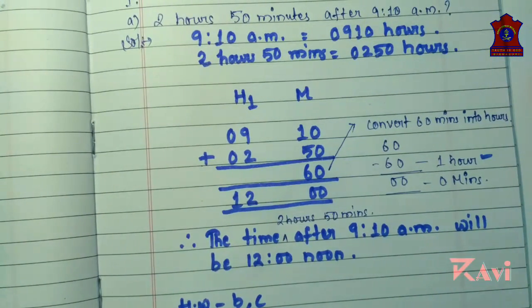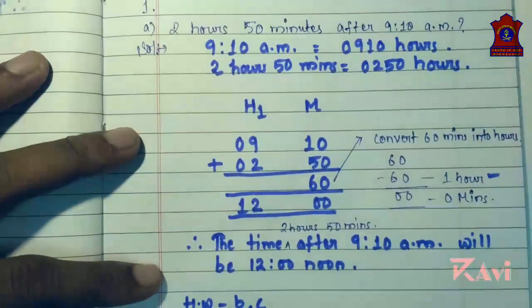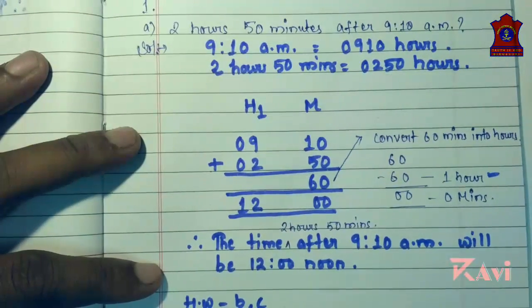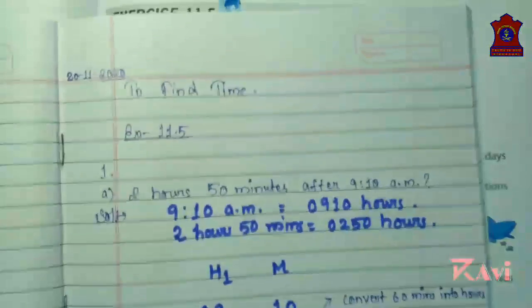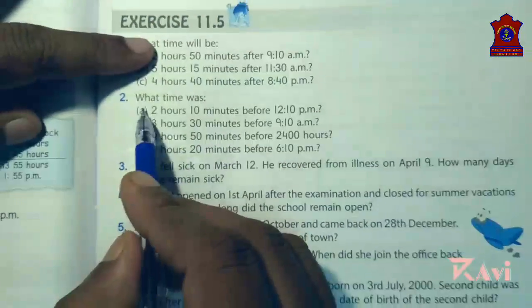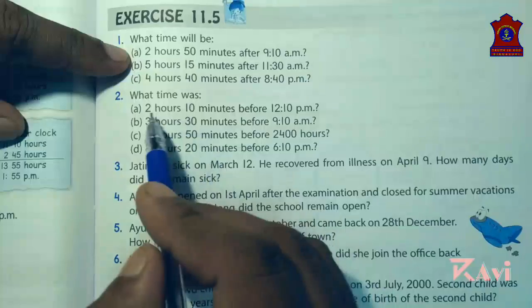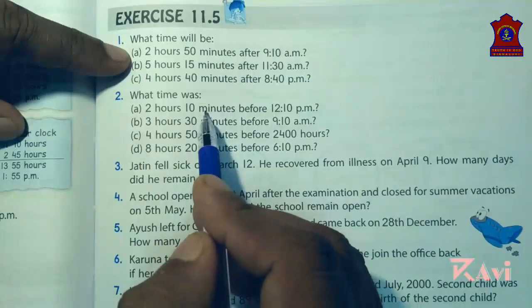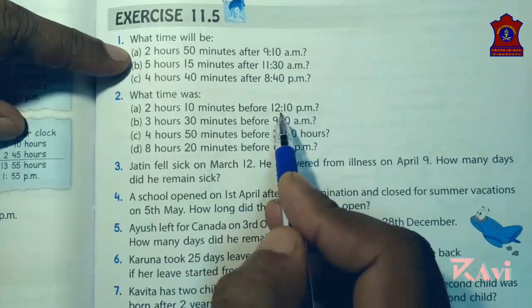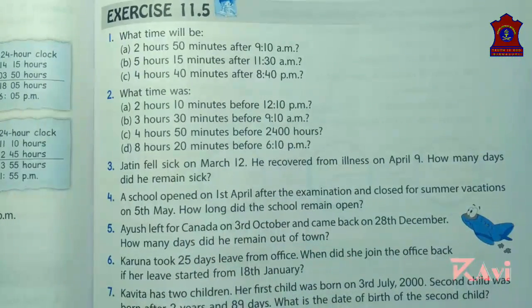Now let's look at question number 2 — 2A. What time was 2 hours 10 minutes before 12:10 p.m.? The question is asking 'before', which means you need to subtract.